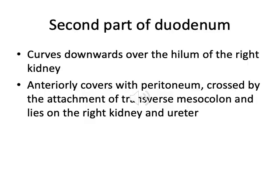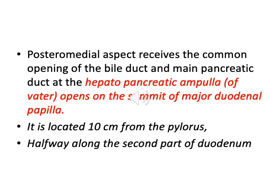The second part of the duodenum curves downwards over the hilum of the right kidney. Anteriorly, it is covered with peritoneum and crossed by the attachment of the transverse mesocolon, and lies on the right kidney and ureter. The posteromedial aspect receives the common opening of the bile duct and main pancreatic duct at the hepatopancreatic ampulla of Vater, which opens on the summit of the major duodenal papilla. This is located about 10 cm from the pylorus, halfway along the second part of the duodenum.